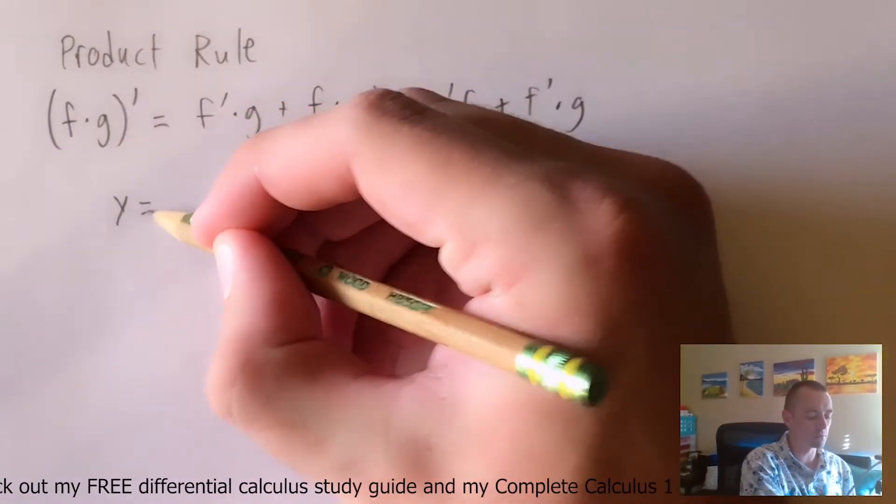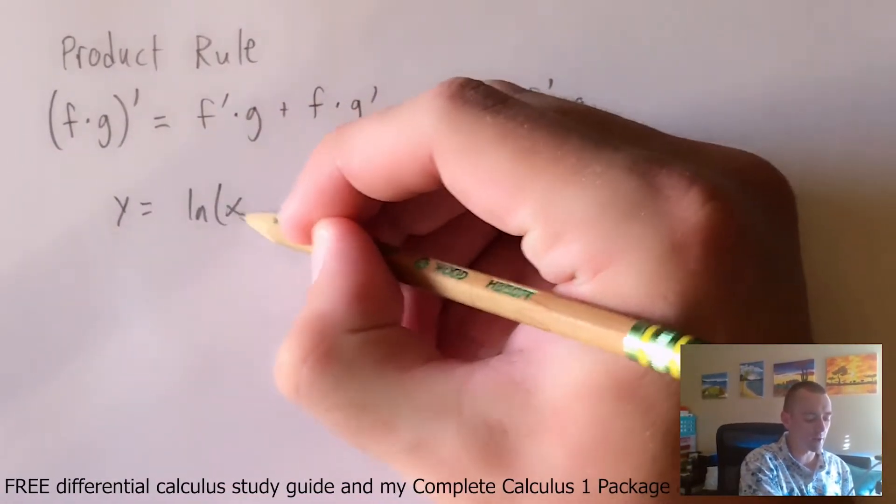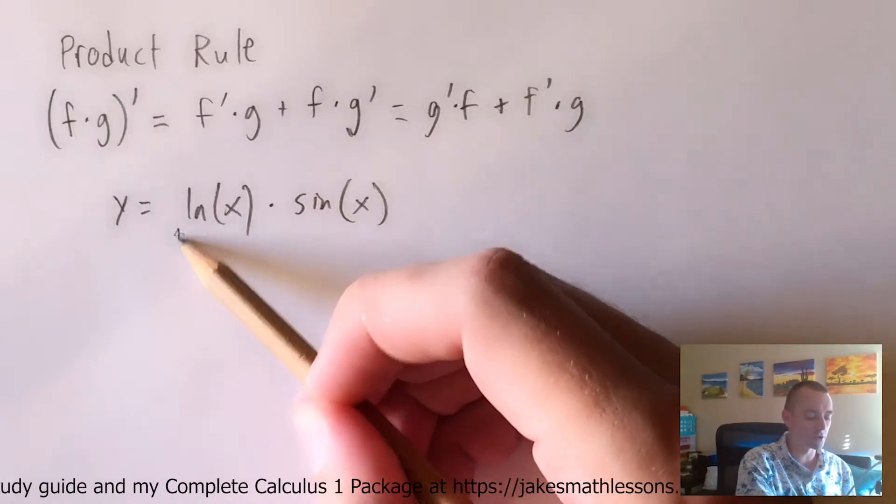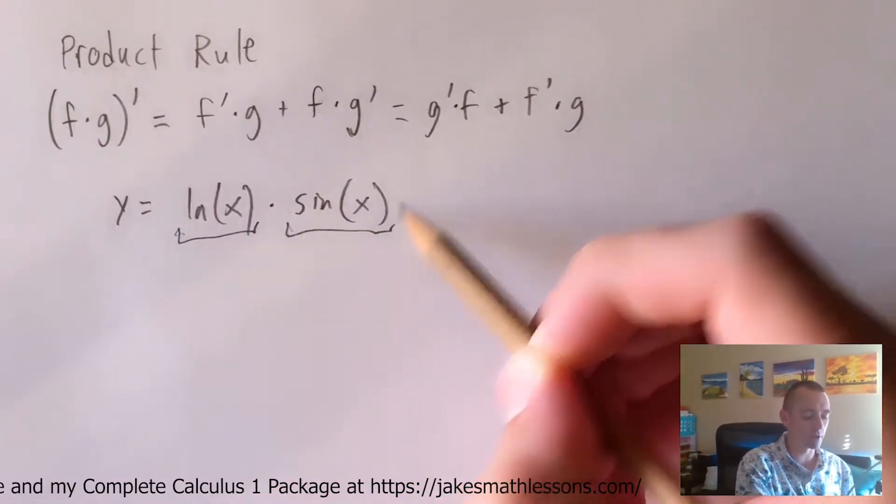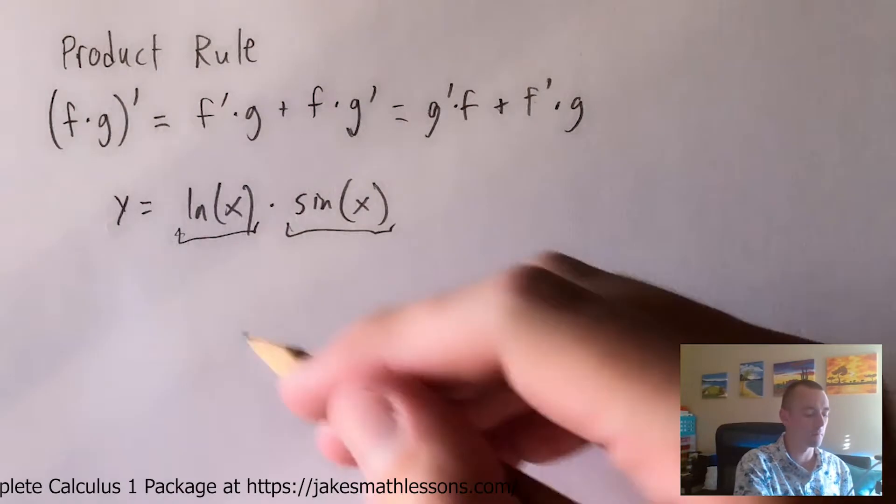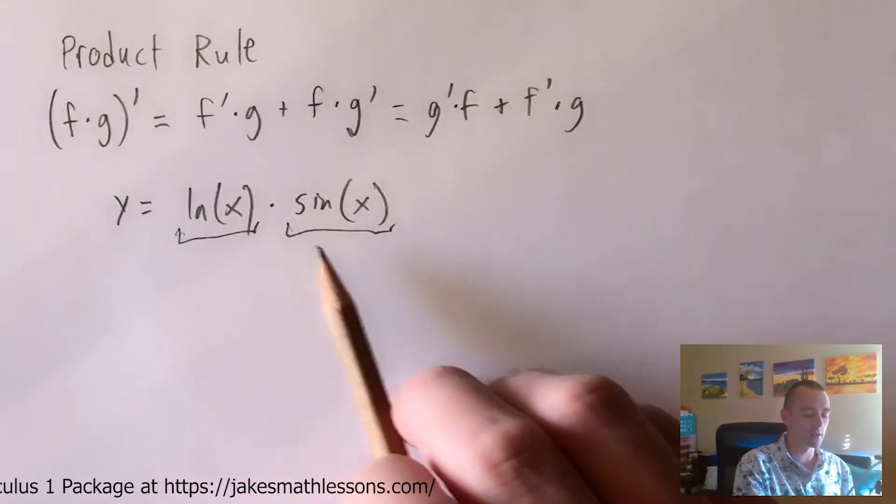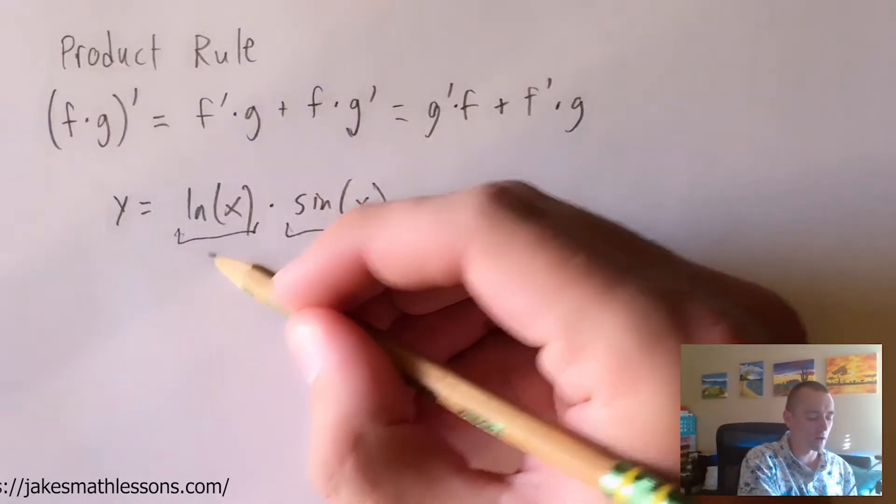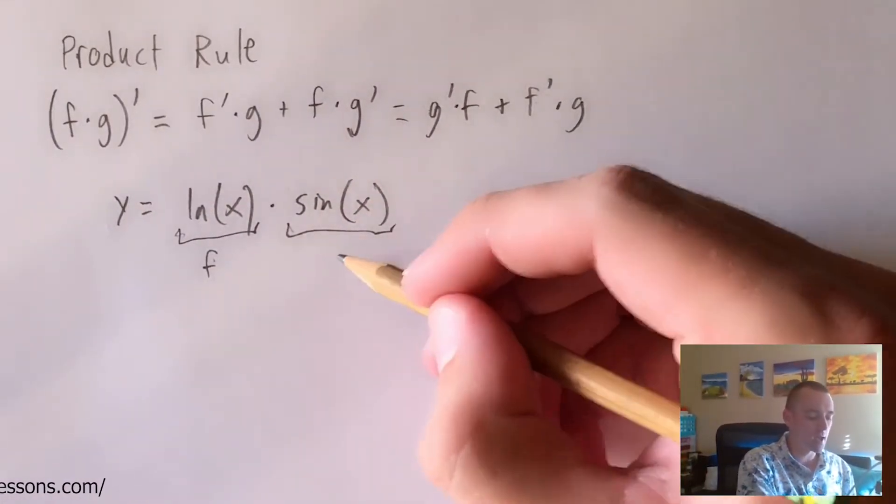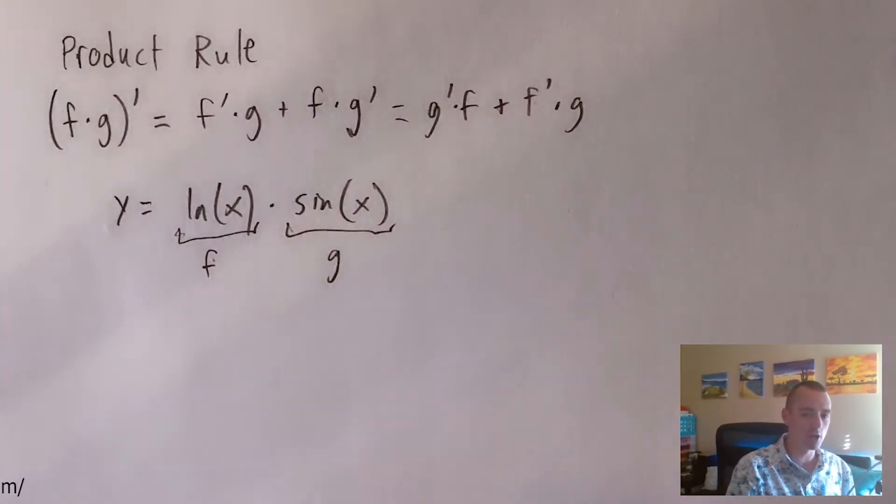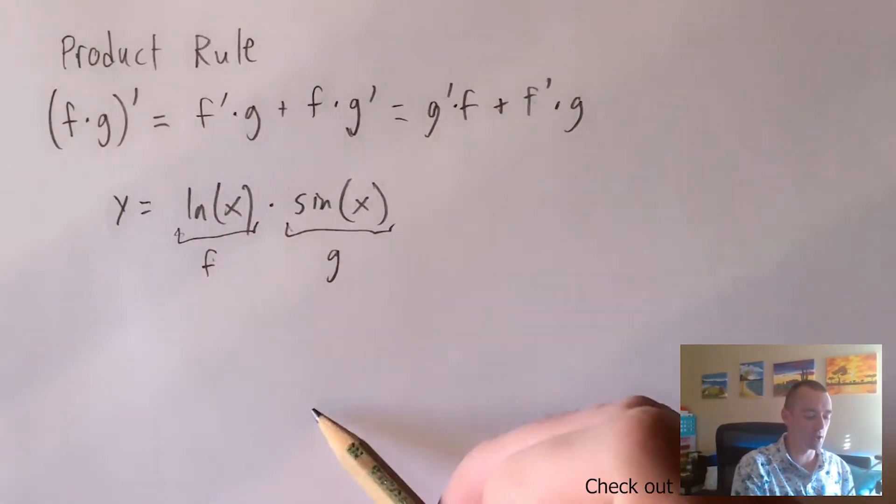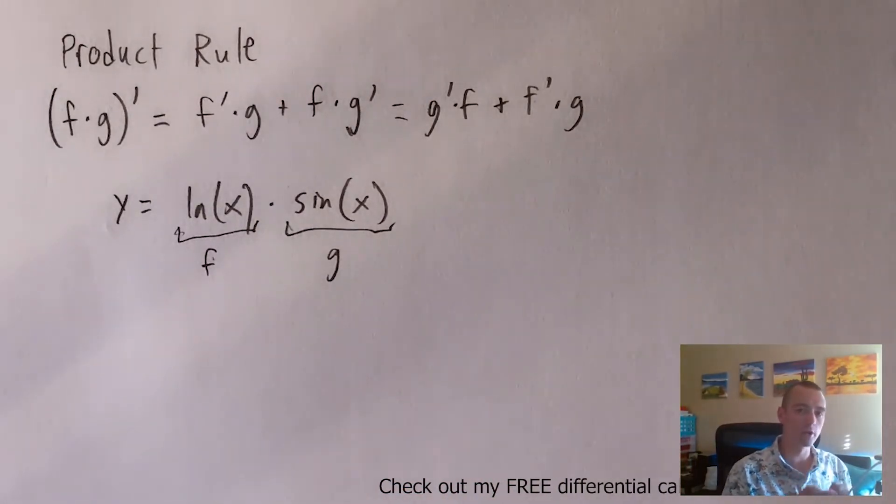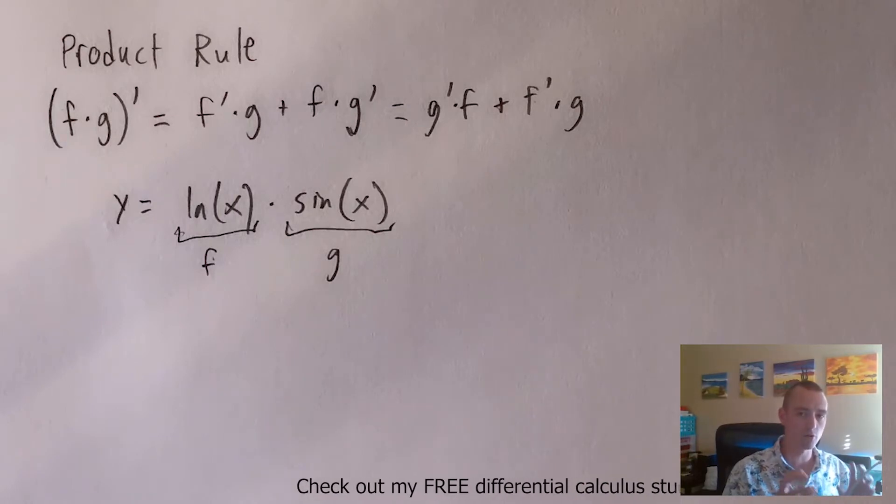So let's say we have some function y equals ln of x times sine of x. Clearly, this is already in the form of one function times another function. It's very easy to see how we could apply product rule here. And again, because the multiplication order could be switched and it doesn't actually change its value, it doesn't really matter if we want to call ln of x our function f and sine of x our function g, or we could call ln of x g and sine of x f. It doesn't really make a difference.